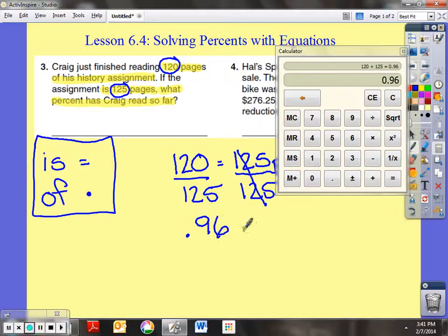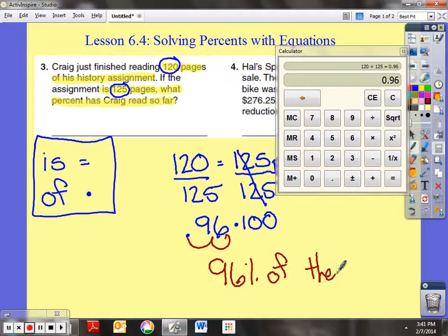Now does that make sense? He's read less than 1% of his entire book? Oh, no, no, no. We have to remember that we want to do percents with times that by 100 or move the decimal two places to the right because it is getting larger. One and two. So Craig has read 96% of the book so far.